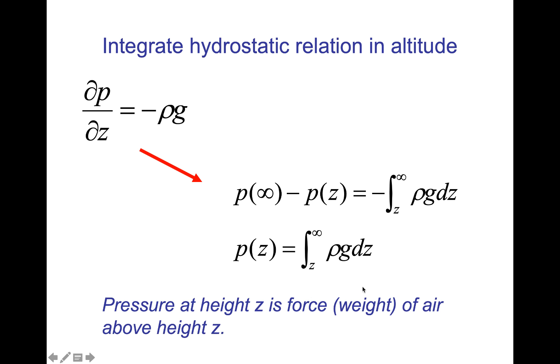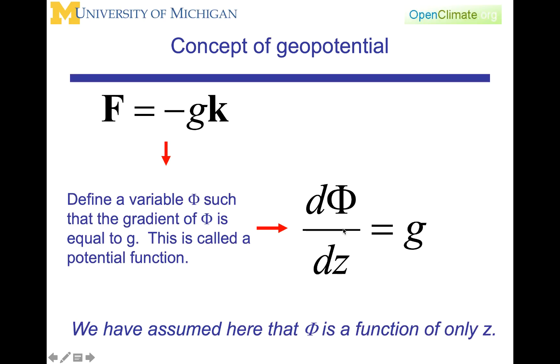To get to the concept of geopotential, we will first consider the vertical force, the gravitational force, and we will use this equation that the gravitational force f equals minus g gravity times the unit vector in your local vertical k. We're going to define a variable phi such that the gradient of phi is equal to g. This in mathematics or calculus is called a potential function. Hence, by definition, d phi dz, that's a full derivative, is equal to g.